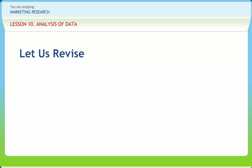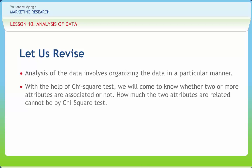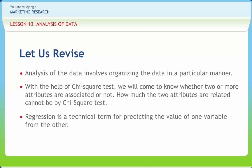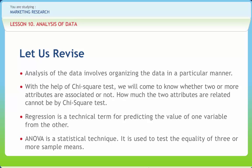Before we end, let us briefly revise what we have studied. Analysis of data involves organizing the data in a particular manner. Interpretation of data is a method of deriving conclusions from the data analyzed. Analysis of data is not complete unless it is interpreted. With the help of chi-square test, we will know whether two or more attributes are associated or not. How much the two attributes are related cannot be determined by chi-square test. Regression is a technical term for predicting the value of one variable from the other. ANOVA is a statistical technique used to test the equality of three or more sample means. Least squares method is used to fit the line. ANOVA is used to draw inference whether samples belong to the same population or not. ANOVA can be one-way or two-way.